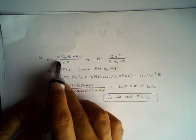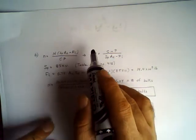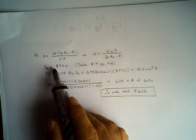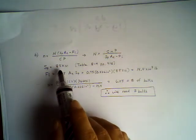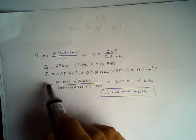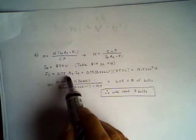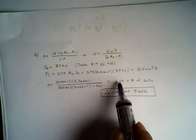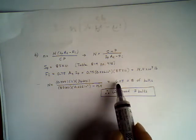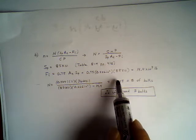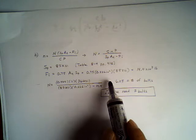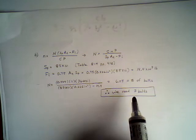Now I can solve for number of bolts. Looking up Sp for grade 5 bolt, Sp would be equal to 85 ksi, and Fi equals 0.75 times At times Sp, which is here. Then I can find the number: n equals 6.05. So I need basically 6.05 bolts.